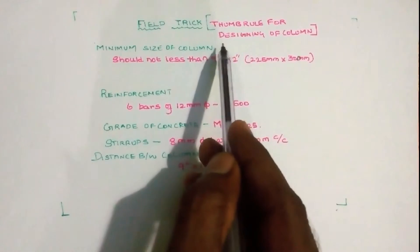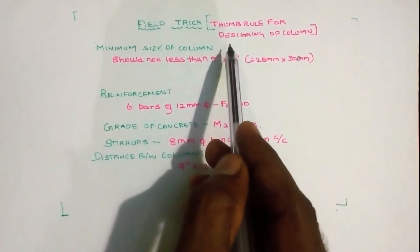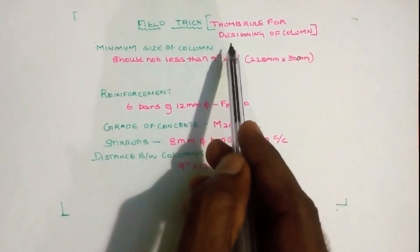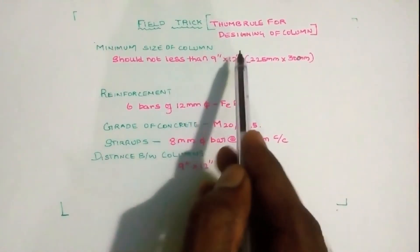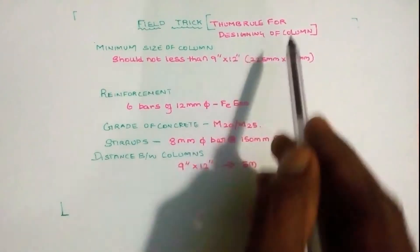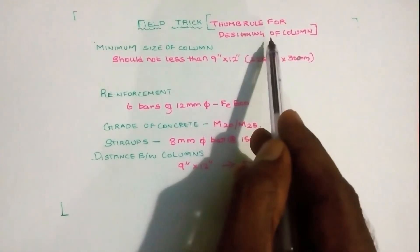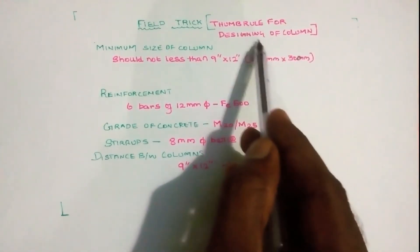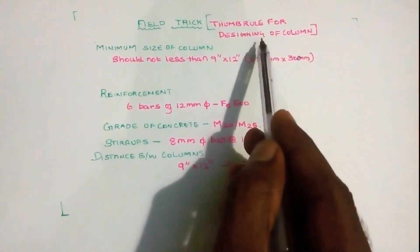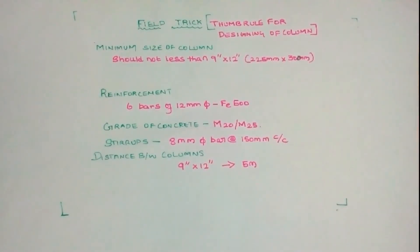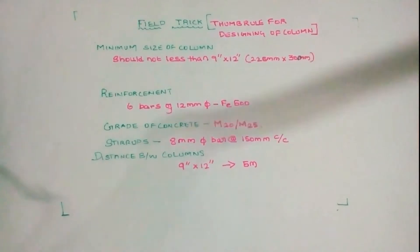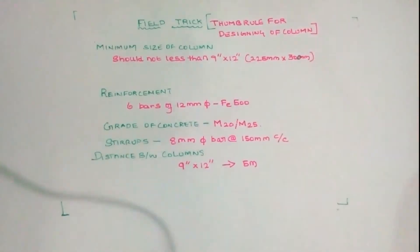In the last video, we covered how to calculate the depth of a beam. In this video, we will look at how to design a column. Engineers follow the thumb rule and use field data for this.